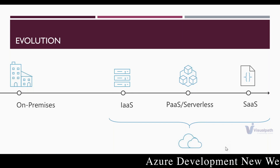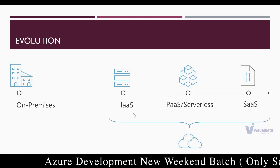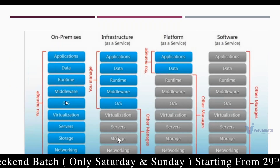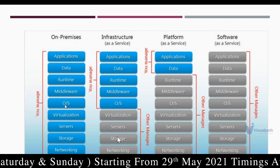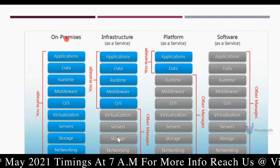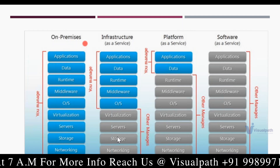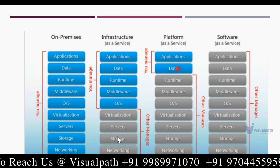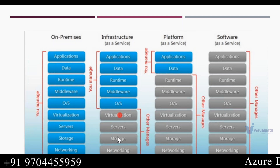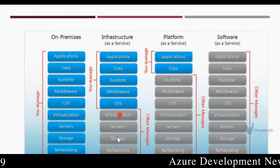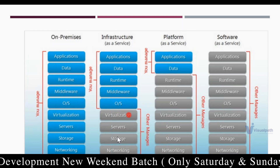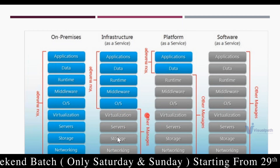Any service in Azure has to fall under one of these categories. Now here you see four vertical sections. Each vertical section contains two colors — blue and gray. Every section represents a responsibility: if it is blue, that is our responsibility; if it is gray, those are Microsoft Azure's responsibility.